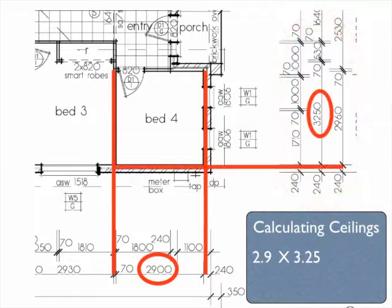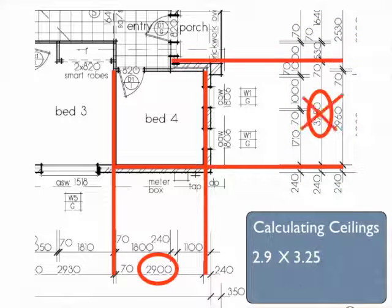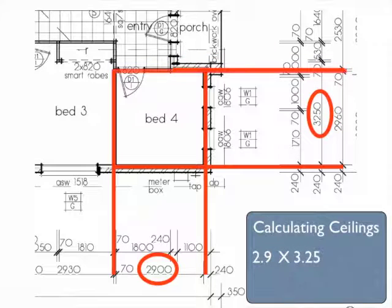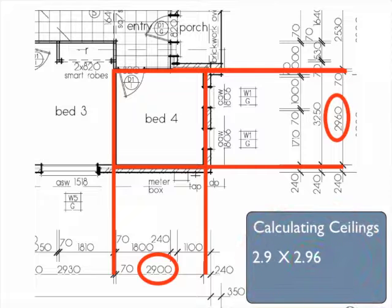Or is it? No, it's not. This is why you should always check with a ruler what the dimension lines relate to. Your eye may make an error. We can see here the actual dimension is 2.96 metres. So the area of the ceiling is 2.9 by 2.96, making it 8.58 square metres.